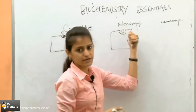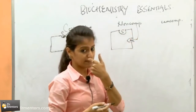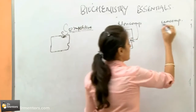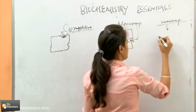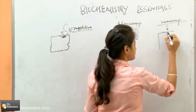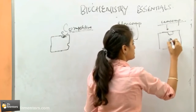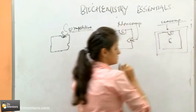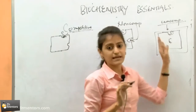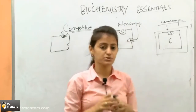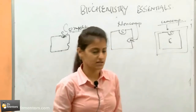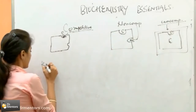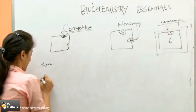It binds at some other site and induces a conformational change in the enzyme, so that the binding to the substrate and the reaction is automatically reduced. Uncompetitive inhibition means it binds only to the enzyme-substrate complex together, not to the enzyme itself.